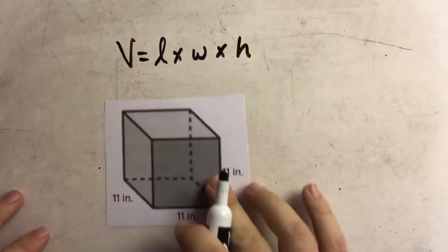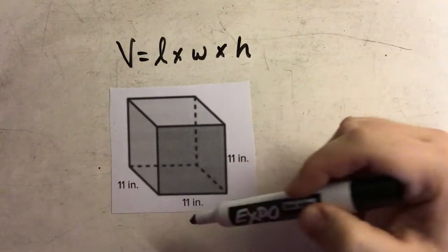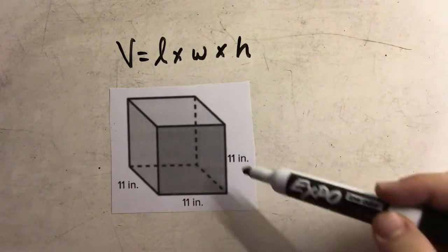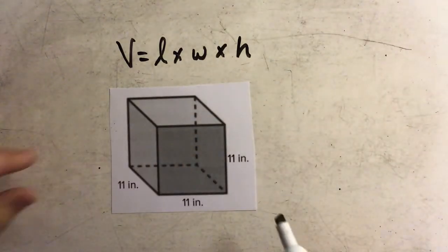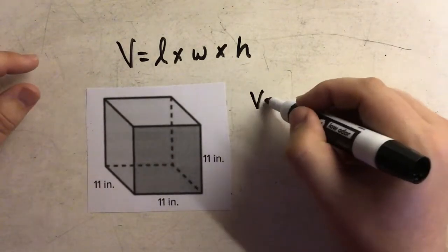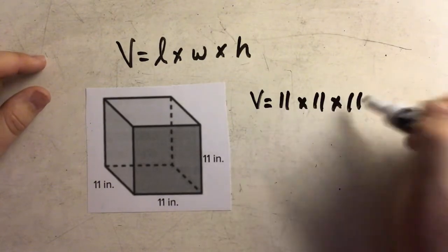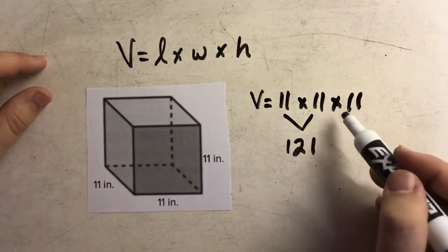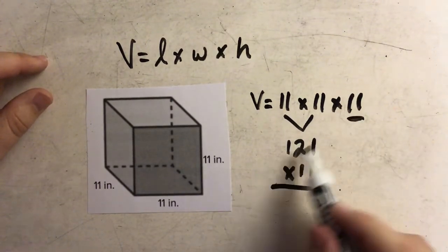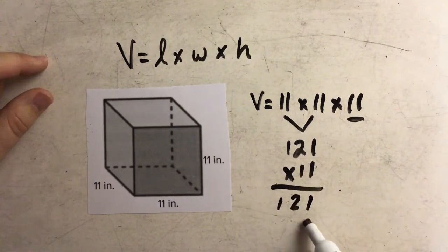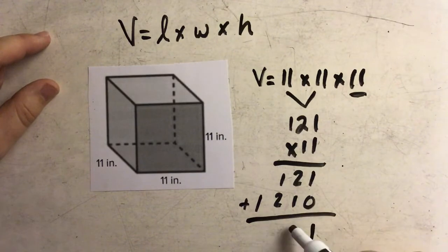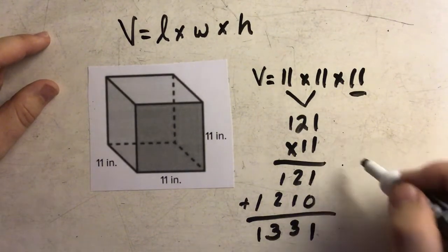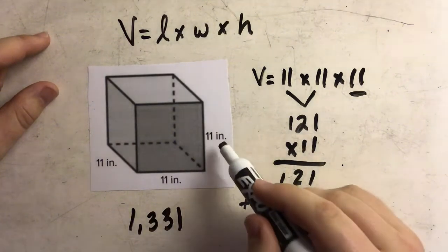Let's look at another example. Here you'll notice the height, width, and length are all the same number. When all three dimensions are equal, you have a perfect cube. We still find the volume the same way by multiplying those three together: eleven times eleven times eleven. Eleven times eleven is one hundred twenty-one, and one hundred twenty-one times eleven equals one thousand three hundred thirty-one cubic inches.